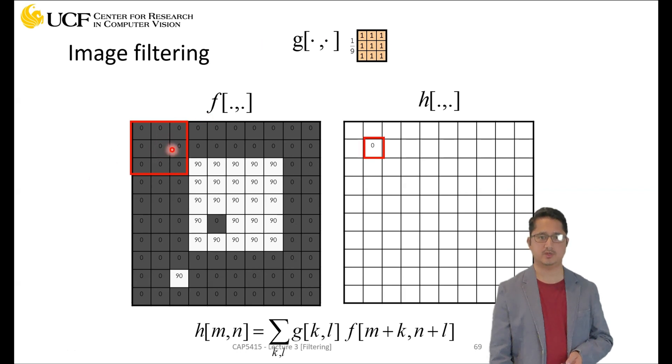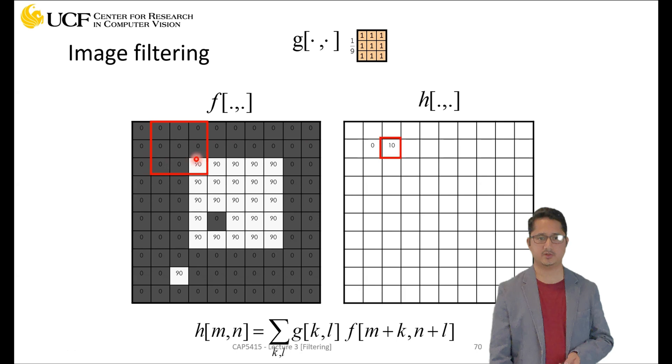What's going to happen? You will get all zero because all these pixels are zero. Then this will be the next location you will move toward the right, and here you can see all of these are zero.